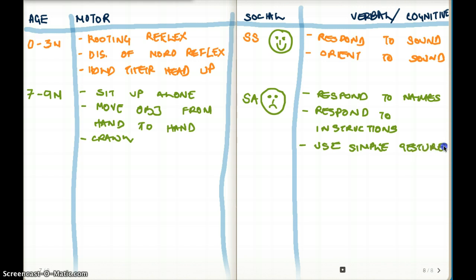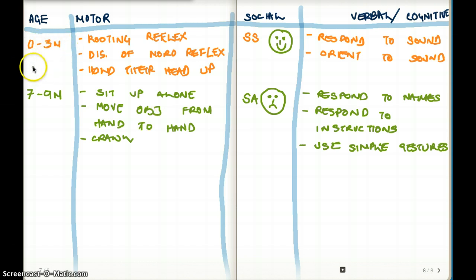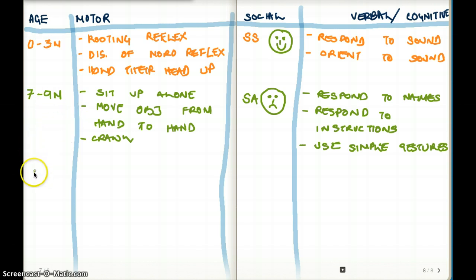So that's what's going to happen from seven to nine months. Nothing significant happens between ten, eleven, and twelve months. The next milestone is going to be from twelve to fifteen months.